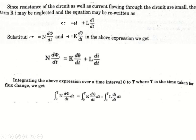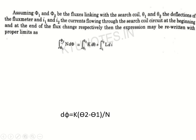Integrating all terms with respect to dt over 0 to t, where t is the time taken for flux change, and cancelling dt, the limits change: let Φ1 and Φ2 be the flux linking with the search coil, and θ1 and θ2 be the corresponding deflections. Let i1 be the current when flux is Φ1 and i2 be the current when flux is Φ2.